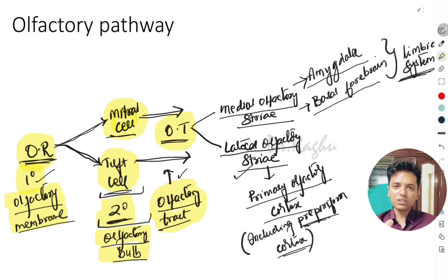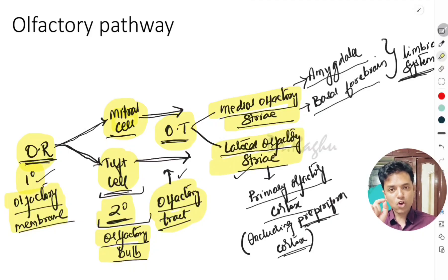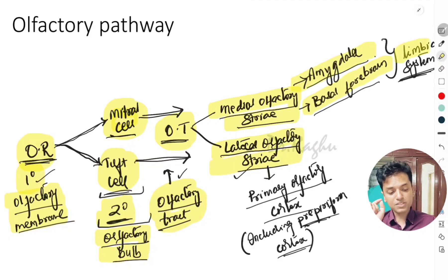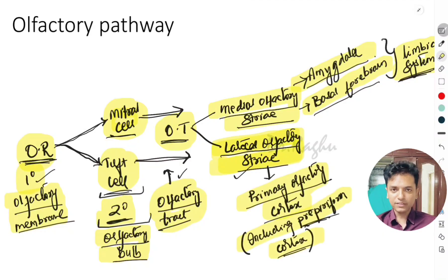The olfactory tract divides into two parts: the medial olfactory stria and the lateral olfactory stria. The fibers forming the medial olfactory stria terminate in the amygdala and the basal forebrain, which are parts of the limbic system. The fibers forming the lateral olfactory stria terminate in the primary olfactory cortex, including the pre-piriform cortex. This is the complete olfactory pathway.